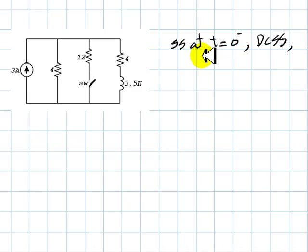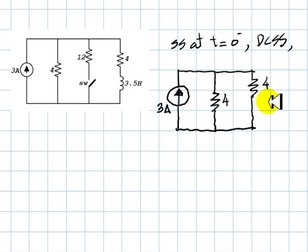The first thing we will do is to take a snapshot of the circuit right before the switch operates at T equals 0 minus. The circuit was in DC steady state, so the inductor can be represented as a wire. This is the snapshot.